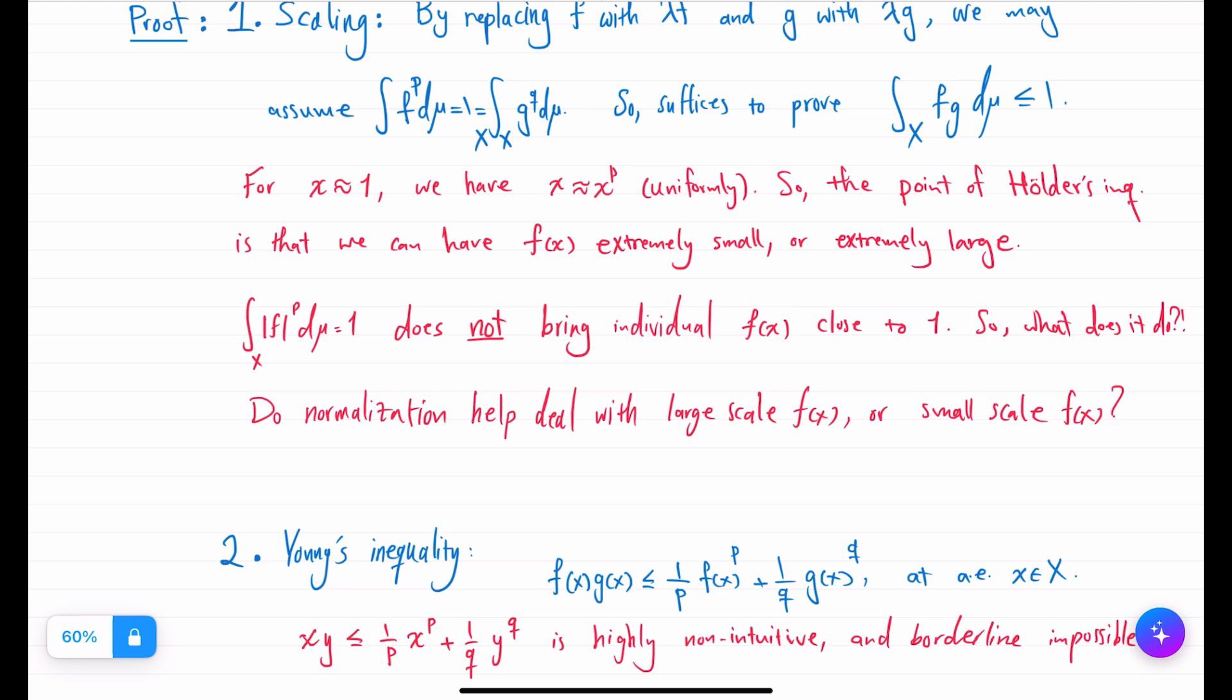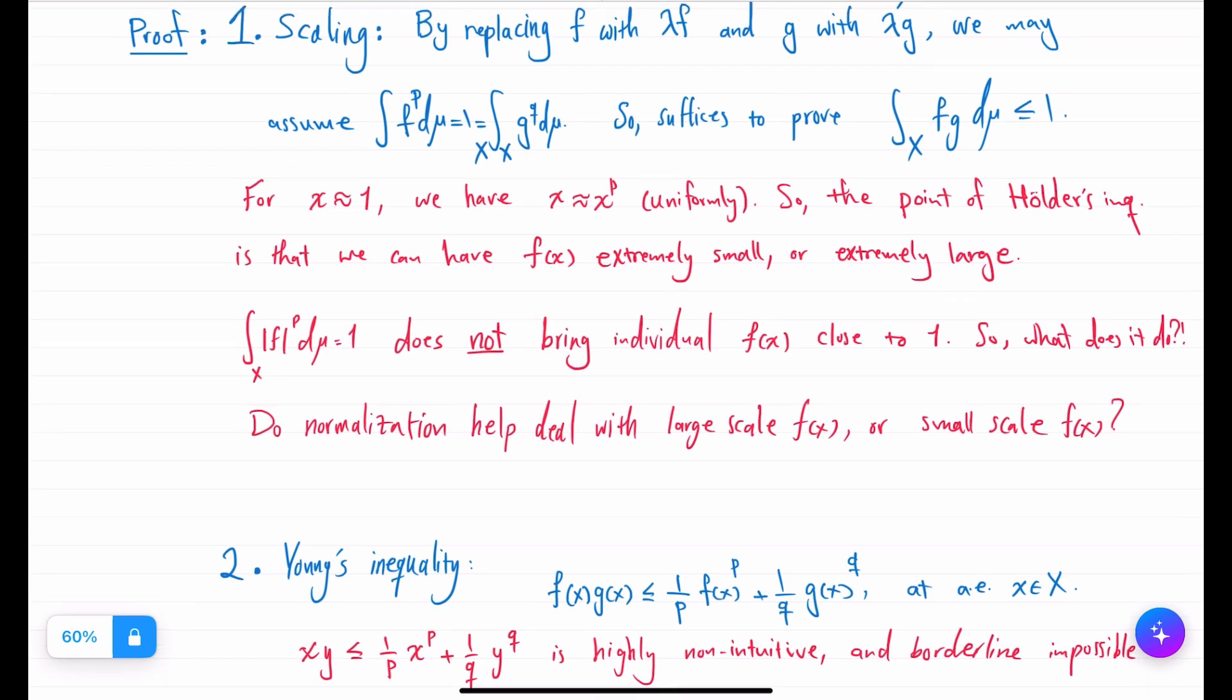Now the normalizations in the proof that start—remember integral is on average since this function is near 1, but the values, individual values, can still be going all the way to infinity and going all the way down to 0. So normalizing integral of f^p and integral of g to the q equal 1 does not make values of f(x) either away from 0 or away from infinity. So what does it really then contribute to in the proof?